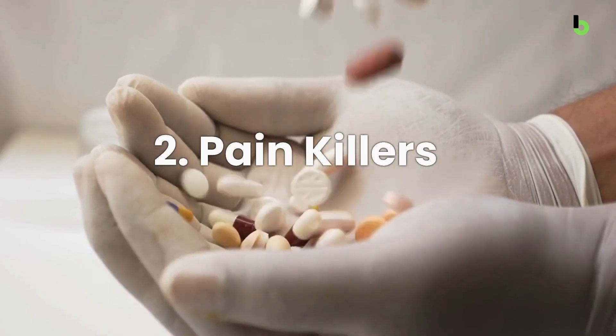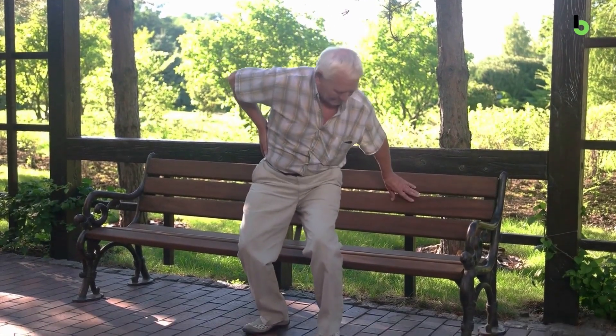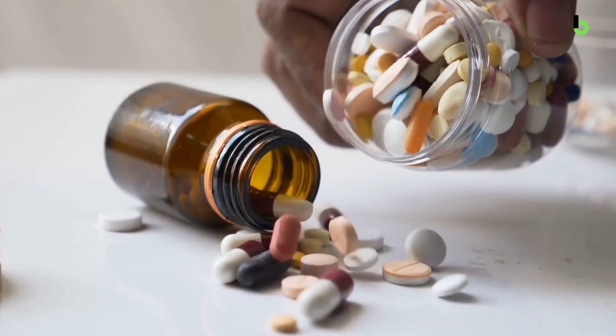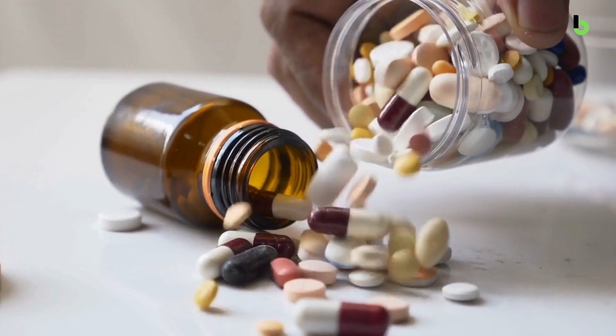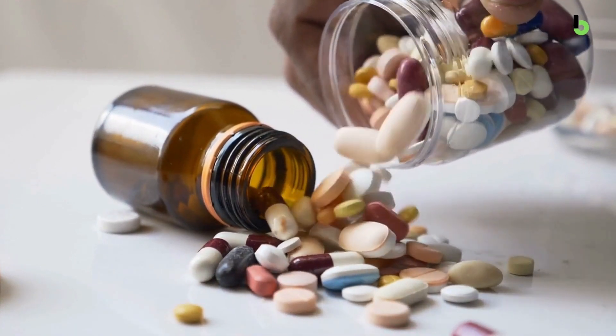Number 2: Overusing painkillers. When you get over the age of 50, many people start experiencing aches and pains in some aspect. Painkillers, particularly non-steroidal anti-inflammatory drugs like aspirin, ibuprofen, and naproxen, can harm the kidneys over time.